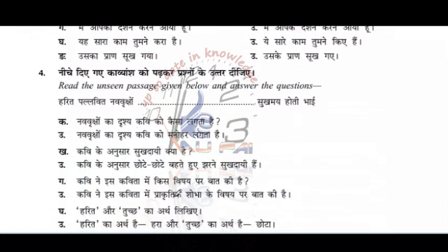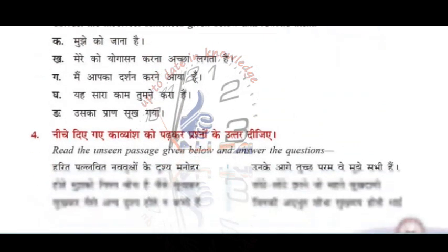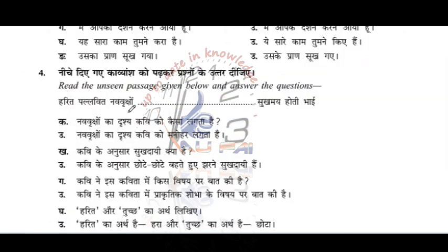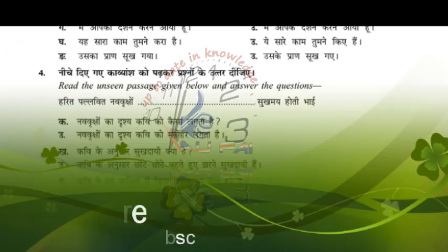Next is a prose poem comprehension. Question: 'Nava vriksho ka drishya kaviko kaise lagta hai?' — How do the new plants and sceneries appear to the poet? Answer: 'Naya vriksho ka drishya kaviko manohar lagta hai.' — Manohar means pleasant.